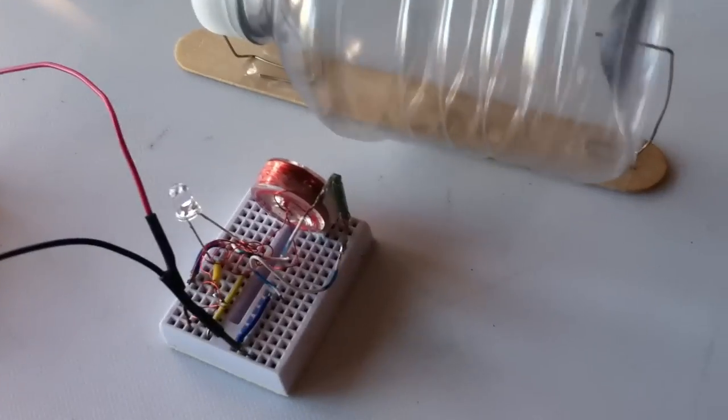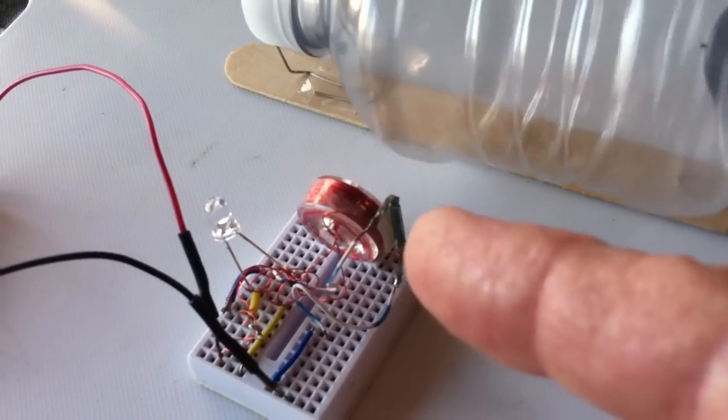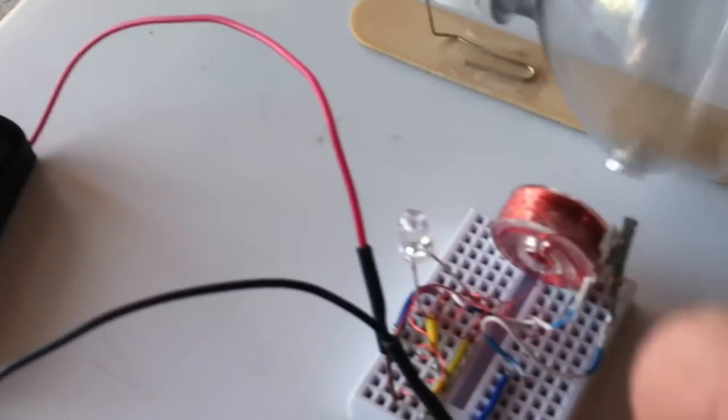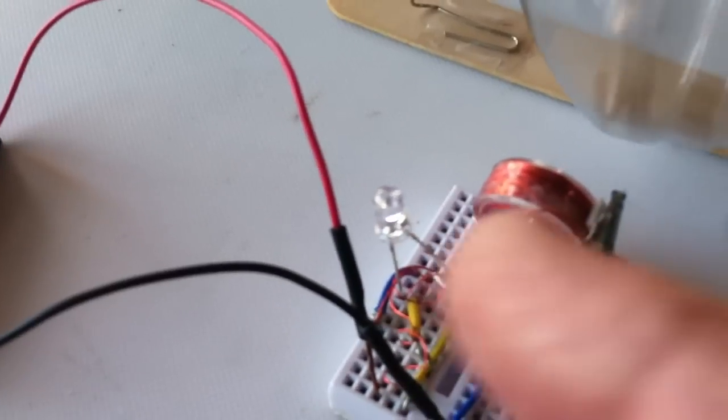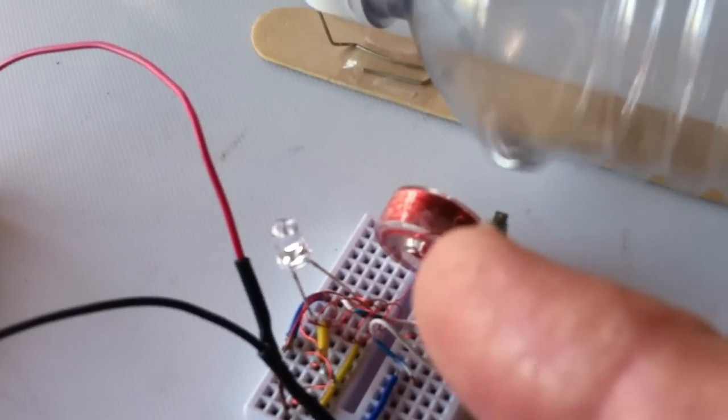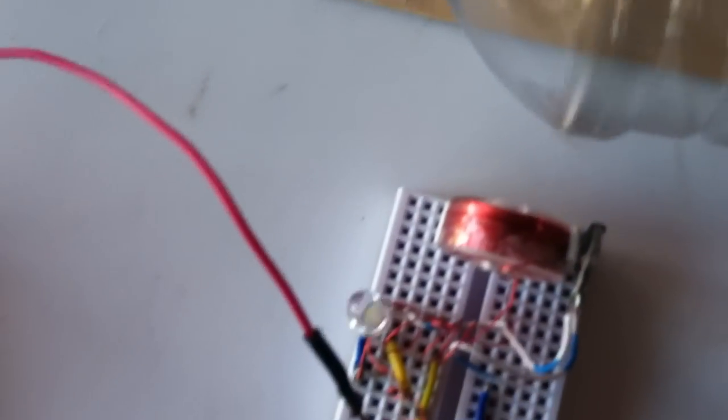And the switch is a magnetic reed switch. They use them in security systems and door alarms and stuff like that. And then my power source is a AA battery here. And then the LED is across the coil, and when the reed switch opens up, the magnetic field in the coil collapses, and that sends out the back spike.